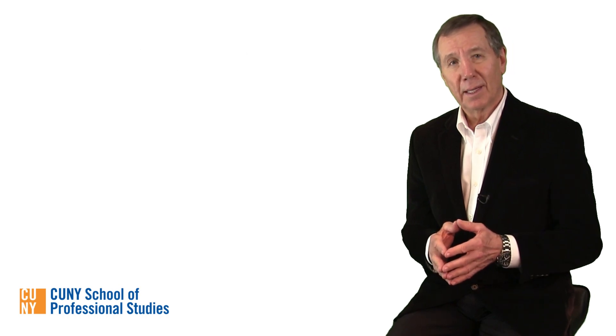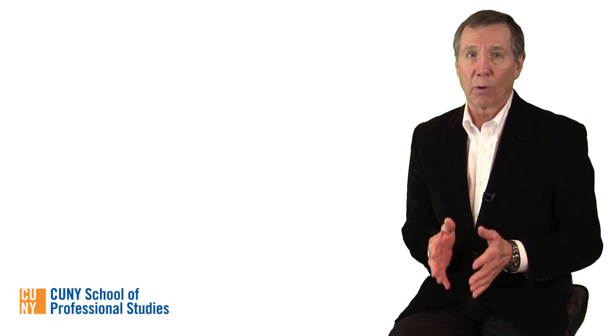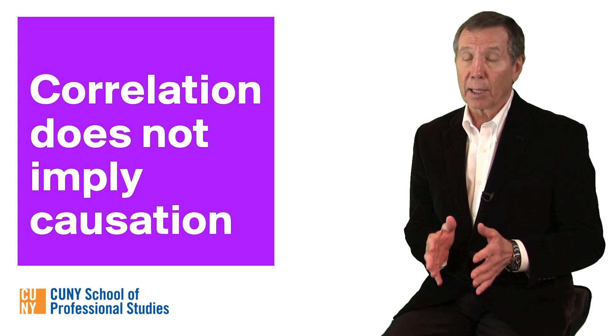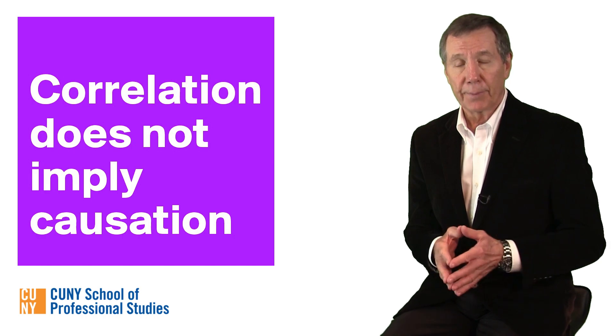Welcome back. While Mill's methods are helpful for determining causes, the results are not always definitive, particularly with regard to the method of concomitant variation, whose defining trait is correlation. But correlation does not imply causation, as David Hume, the great Scottish philosopher, insisted. Here's a video that explains why.